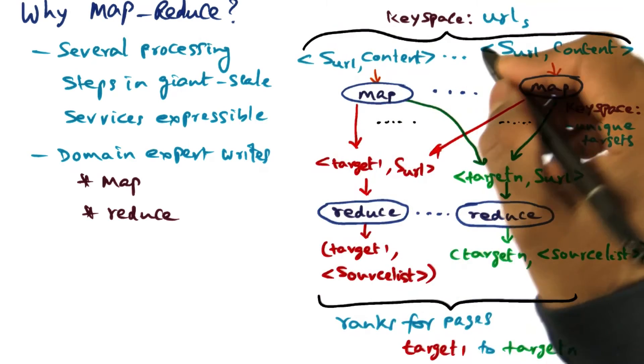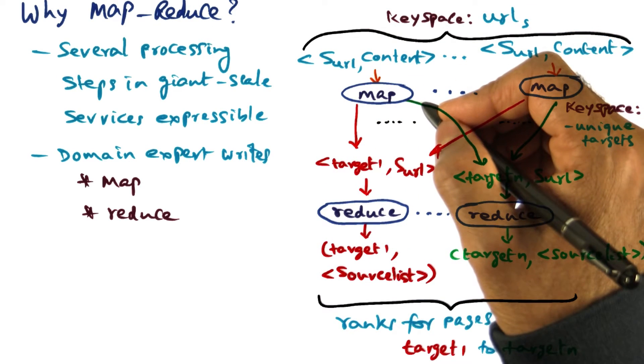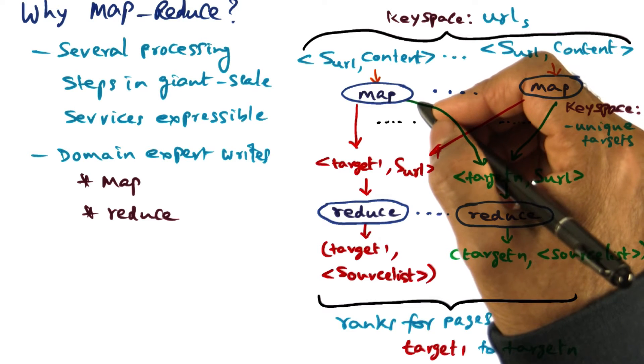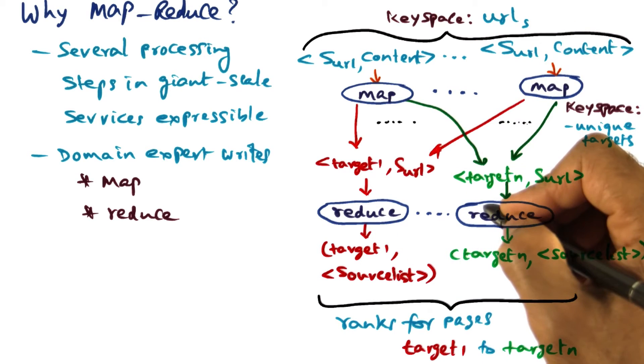So here is another example of how an application may be structured as a MapReduce application. And in this case, I'm showing you a page ranking application. That is, I'm interested in knowing what is the popularity of different URLs that occur in a document corpus.